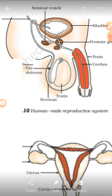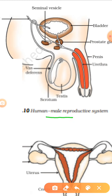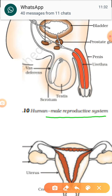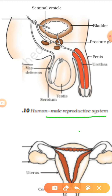We'll be studying the male reproductive system. Let's see the structures involved. We'll be discussing the structure where gamete formation takes place and other structures which are helpful for the entire reproduction process. The structure where gamete formation takes place is called the primary structure or primary sex organ, and the rest of the parts are called secondary organs of reproduction.